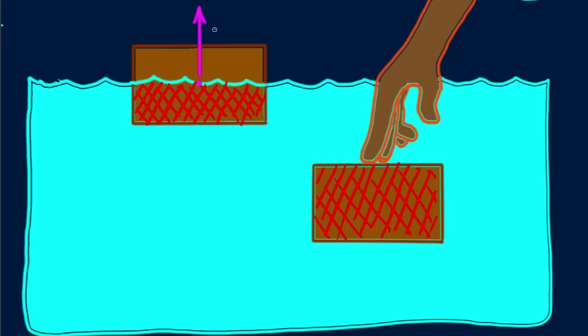In both cases, an upward buoyant force acts on the block of wood. For the freely floating block, upward buoyant force, Bf, is equal to the downward weight of the block, Mg.